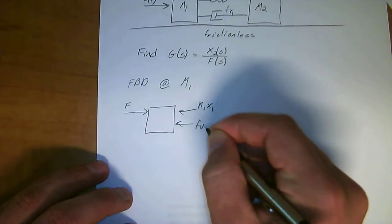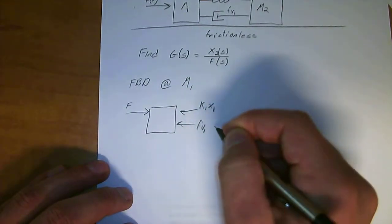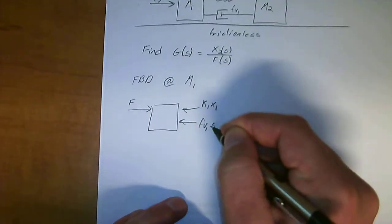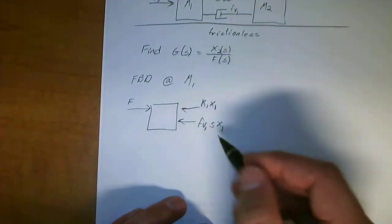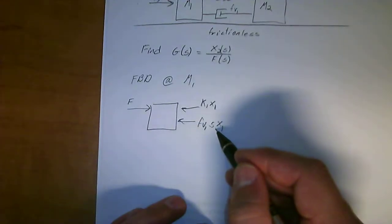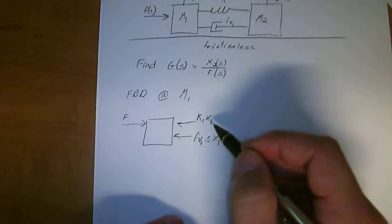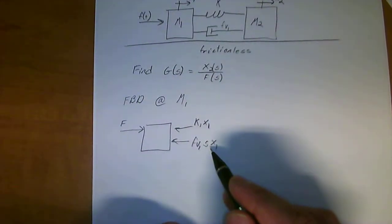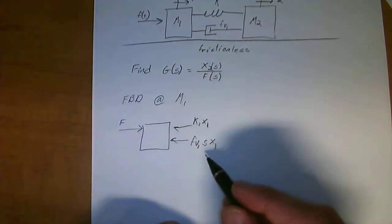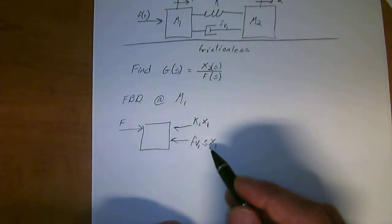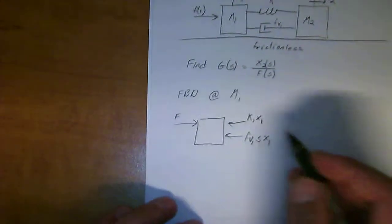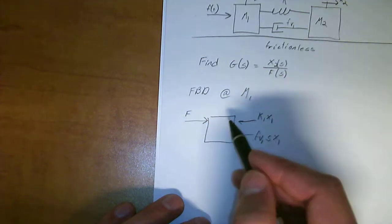And since spring is in relation to the distance that is pulled, how hard it forces, it's times x, so the distance of x1. And then for the damper, it has a relation with velocity. So we have f v1, which is the damping constant, times velocity, which is s times x1. So s is the derivative of a distance. So you could consider this s, the Laplace of x dot. I'm just going to skip the step of the derivative so that we can move right into this.